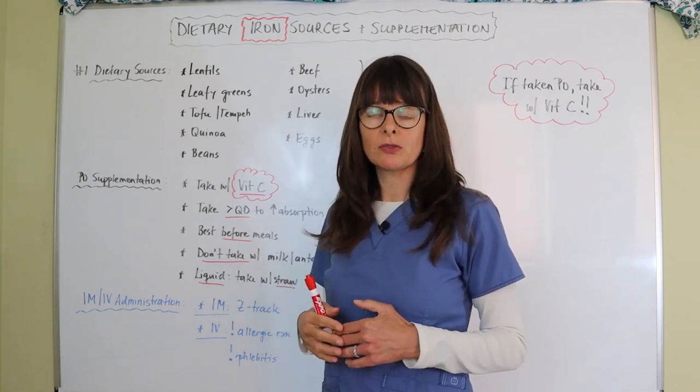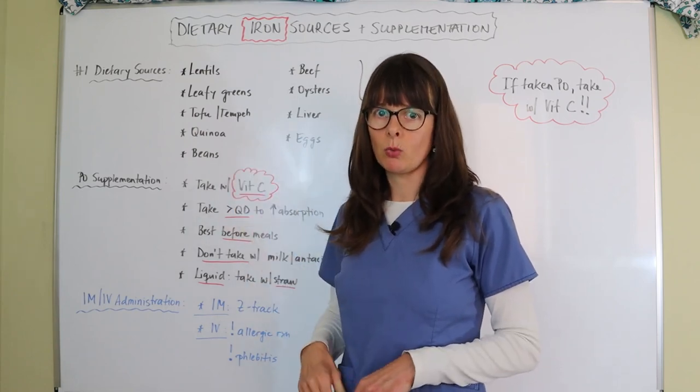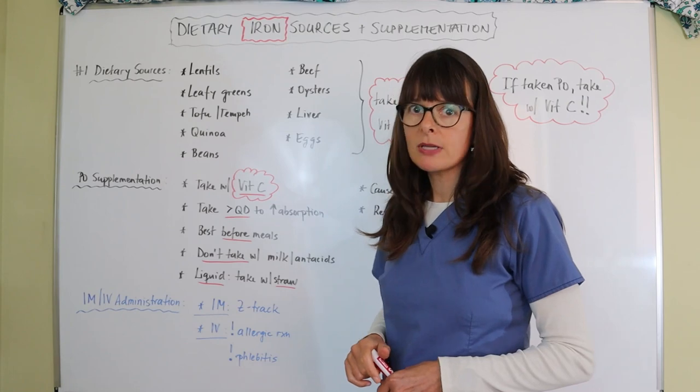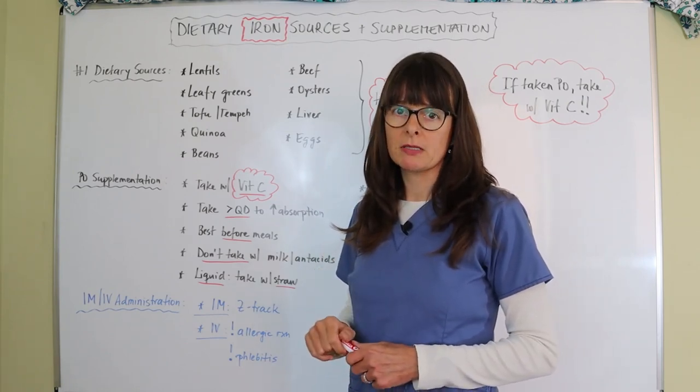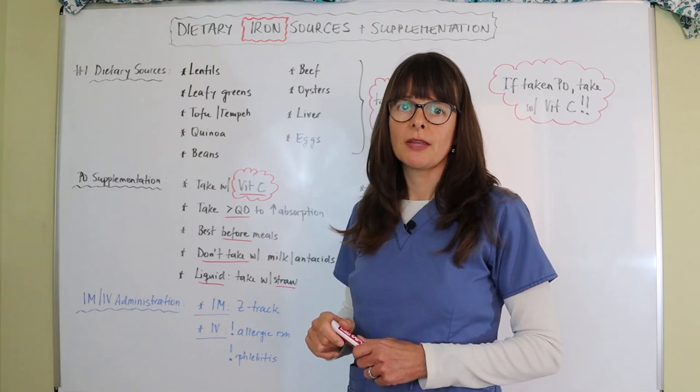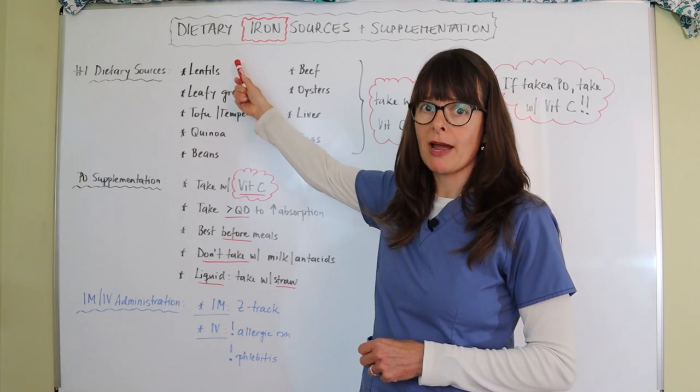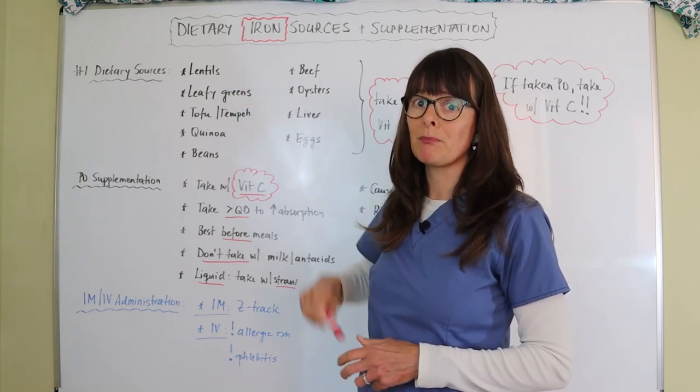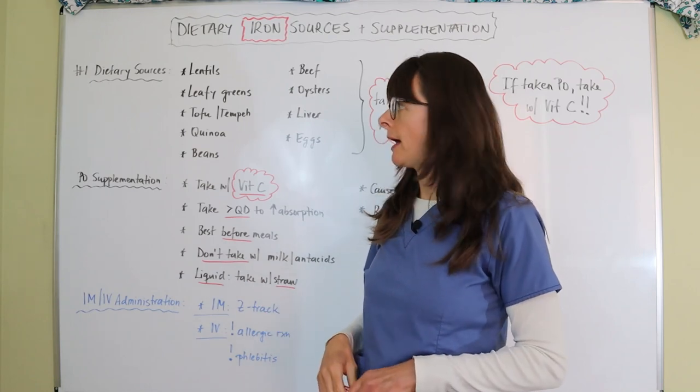For patients with mild iron deficiency anemia or for maintenance, this might be what's needed. I always like to point out that there are not only animal-based products that are high in iron. As a matter of fact, lentils gram per gram actually have a higher iron content than beef, which is usually what we think about.